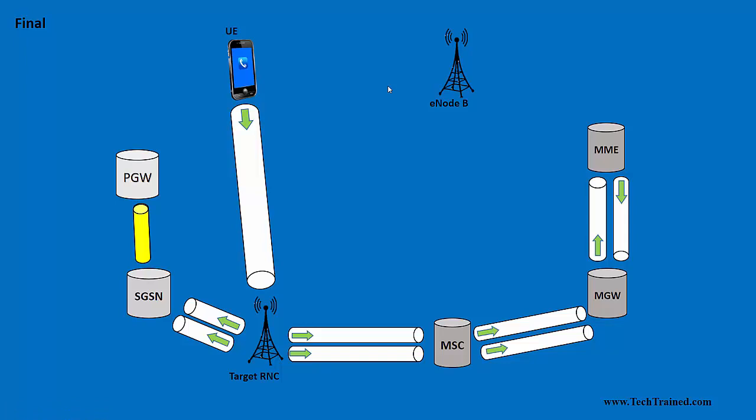Once those resources are released and sessions are deleted, the UE is now connected towards the UTRAN. The bearers are deleted and this is the final picture. This is how SRVCC seamlessly hands over the UE from LTE towards 3G. We discussed the scenario for 3G specifically, considering both packet switch and voice sessions being transferred together. The signaling flow could differ depending on the specific feature being used in the field.